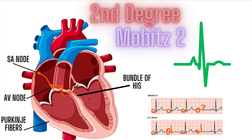Mobitz 2 can be more severe than Mobitz 1 — it can progress into a third-degree heart block, which is far more dangerous. This is definitely something to be concerned about, and we need to look at what caused it and what can be done to correct it.